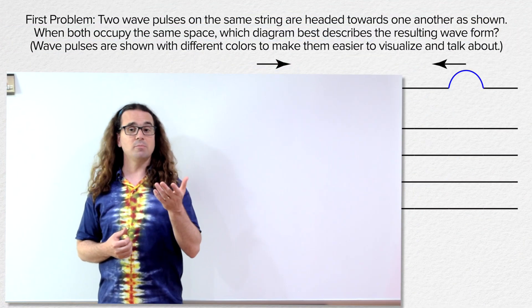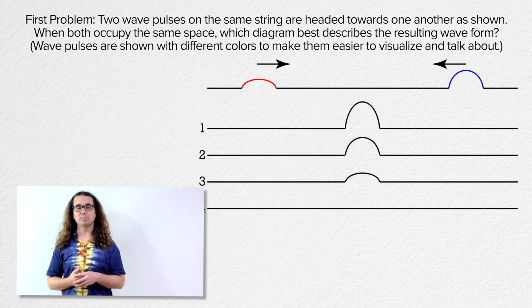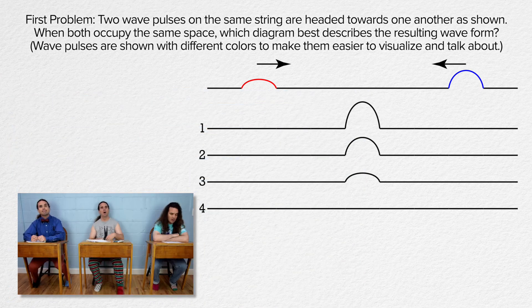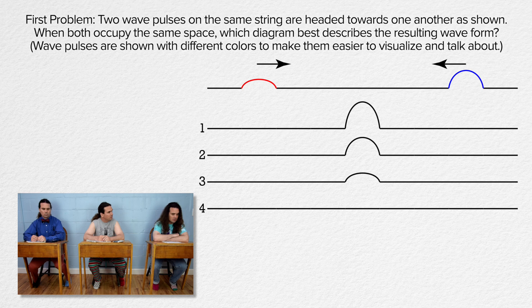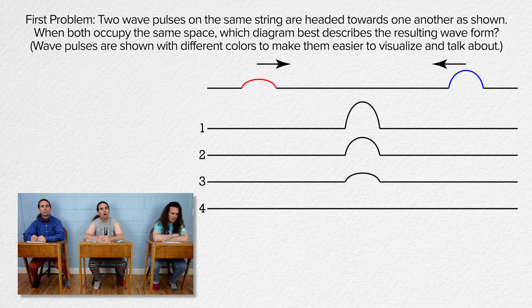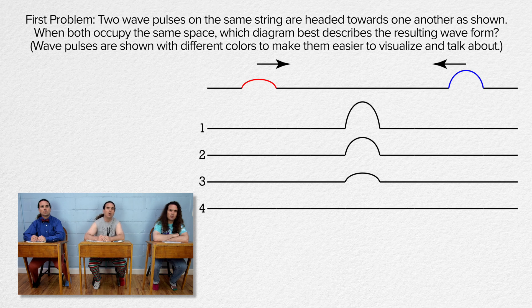Bo, please read and Bobby, please answer the first problem. Two wave pulses on the same string are headed towards one another as shown. When both occupy the same space, which diagram best describes the resulting wave form? Wave pulses are shown with different colors to make them easier to visualize and talk about. Does that mean the top illustration is all one rope even though it is black, red, and blue?